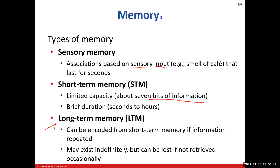Where long-term memory comes into play is when we get something into short-term memory and successfully move it into long-term memory — we call that process encoding. In order to encode something, we increase our chances by repeating whatever it is over and over again. If we successfully encode it, it moves into long-term memory; if not, it's lost and we have to start the whole process over again.